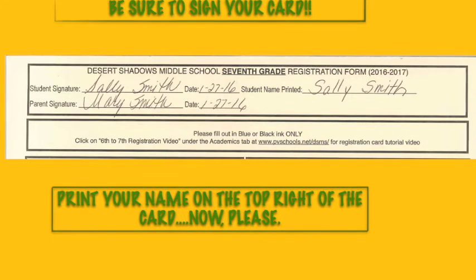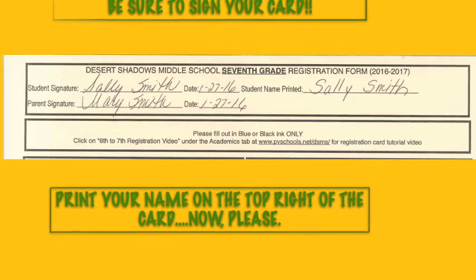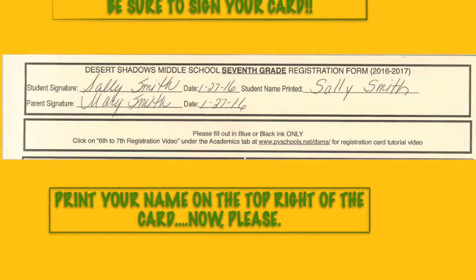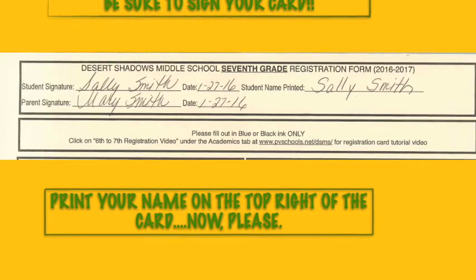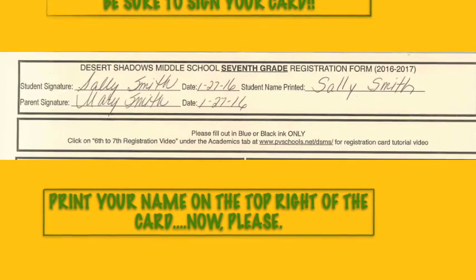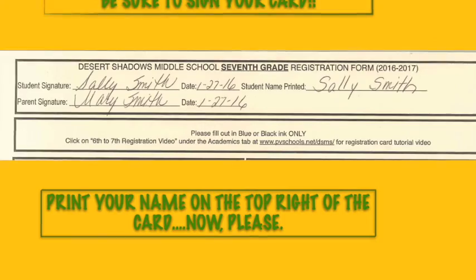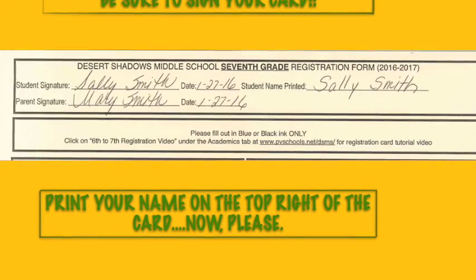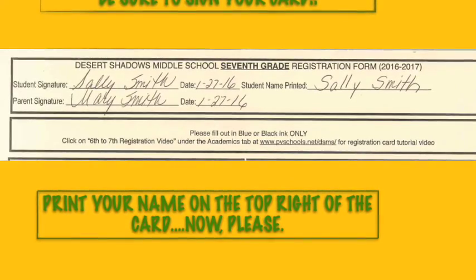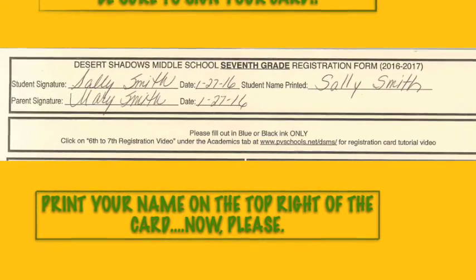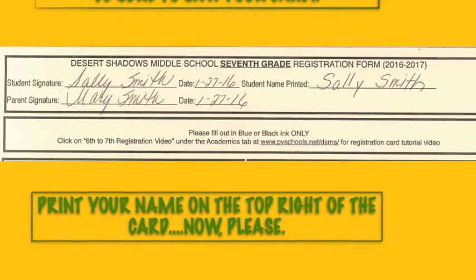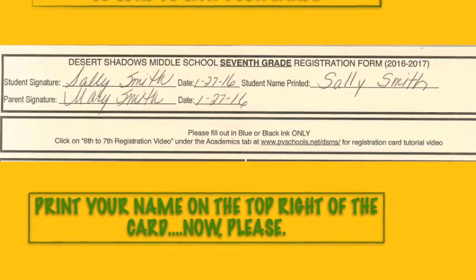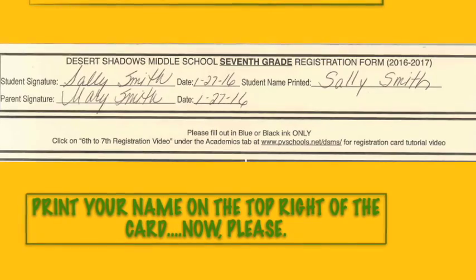Finally, at the top of the card, be sure to sign and date where it says Student Signature and Date. Make sure to have your parents sign and date where it says Parent Signature and Date. Now go ahead and print your name in the upper right-hand corner where it says Student Name Printed — that way, if you lose your card, your teacher will be able to get it back to you.